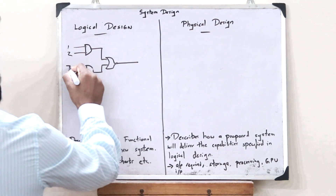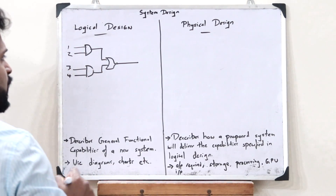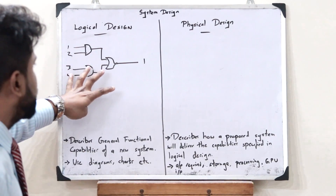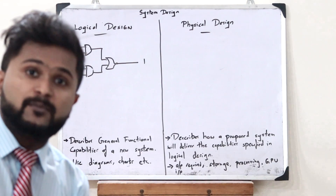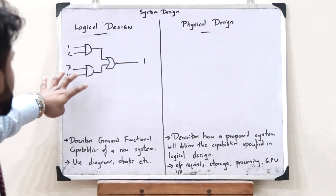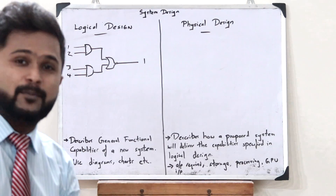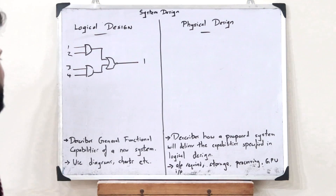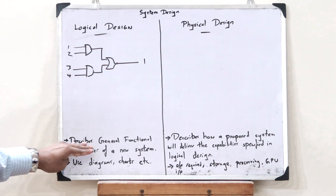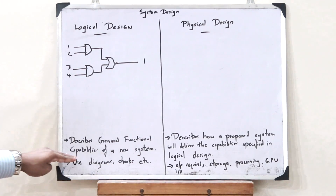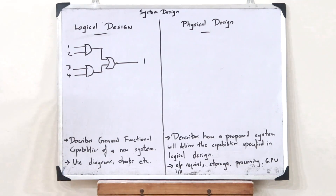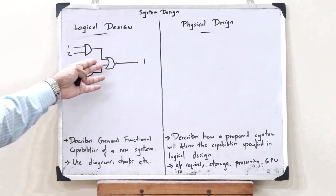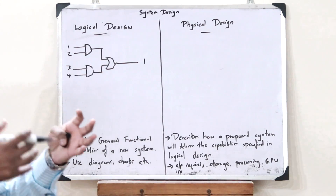So here there are four inputs and one output. This is the function that I require a particular chip to perform. This is simply what you refer to as the logical design — it describes the general functional capabilities of a particular system. Here we make a logical design with the help of diagrams, charts, etc. I have represented the logical design using gates — two AND gates and one OR gate.